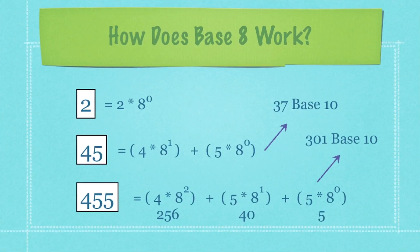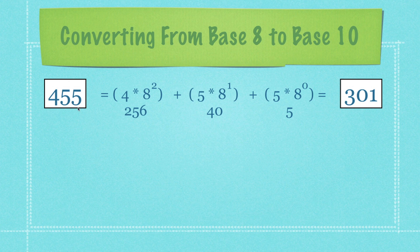In the last tutorial we talked about exactly how base 8 works, and that shows us how we're going to convert from base 8 back to base 10. Let's focus in further. If we have 455, which is a representation in base 8 of the base 10 number 301, we need to figure out how to take that and simply create it inside of a function.